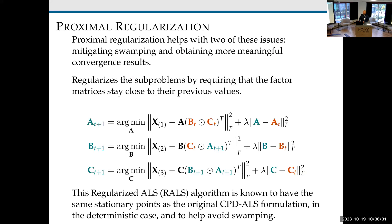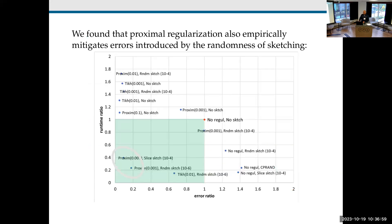When you use regularized ALS, you converge much faster than if you don't regularize. We're using proximal regularization — this is called the regularized ALS algorithm, and it's known to have the same stationary points as the original CPD formulation in the deterministic case. It helps avoid swamping because adding proximal regularization makes each of these problems strongly convex. We also found empirically that proximal regularization mitigates the errors introduced by the randomness involved in sketching.